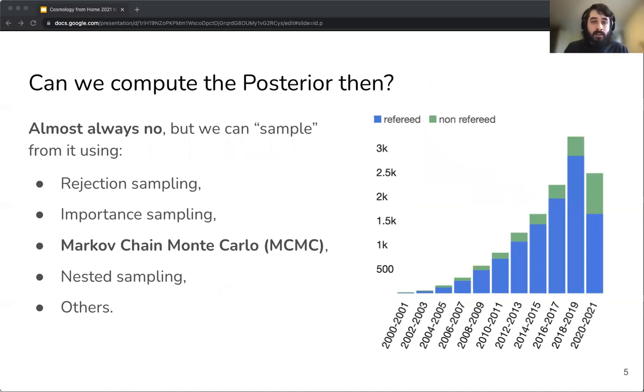Right now that we understand the importance of the posterior distribution, the next question we should ask is can we compute the posterior? Unfortunately the answer is almost always no, but in most cases we can sample from it. What we mean by sampling is producing a collection of points in parameter space that follow the posterior distribution. There are many ways of sampling from a distribution, but by far the most commonly used one and for good reason is Markov chain Monte Carlo or MCMC. In the figure on the right you can see the number of astronomy papers mentioning the word MCMC somewhere in the text during the past couple decades. As you can see the use of MCMC in astronomy grows exponentially.